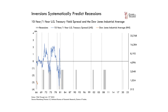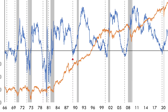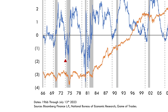We've seen yield curve inversions almost flawlessly predict every single recession in recent financial history. But despite the flawless track record, there is lots of variation between the moment that the yield curve inverts and when the recession actually plays out — ranging from the 2006 inversion that took almost 16 months, to the 1974 inversion that played out for a recession almost immediately.